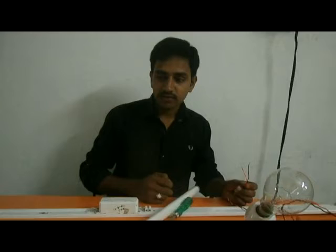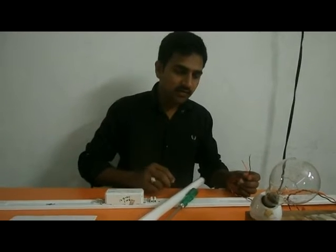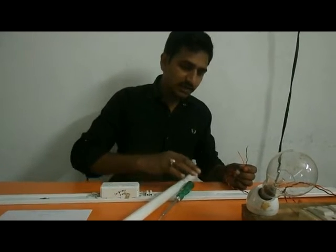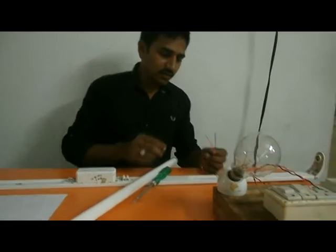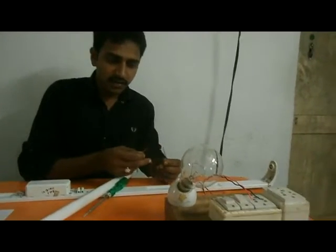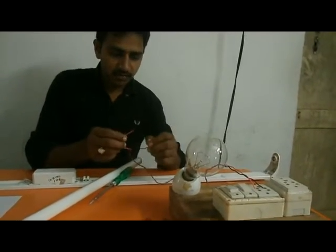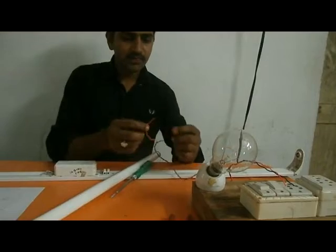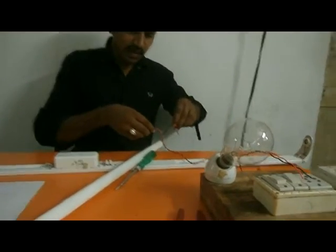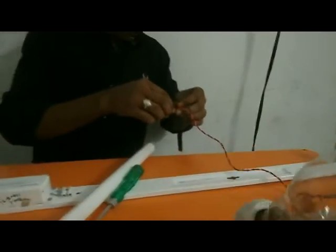To test the healthiness of the tube light or the choke or the starter, we usually use series test lamp testing. This is a series test lamp. When we connect the wires together, the series lamp glows.